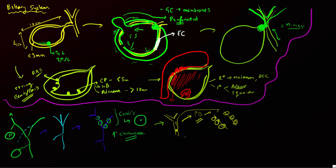The bile ducts are supplied by the hepatic artery, so any compromise to hepatic arterial flow — thrombosis or stenosis — causes biliary ischemia with bilomas. In transplant patients with hepatic artery damage, always examine the biliary tree for irregular ductal dilatation, bilomas, and abscesses.